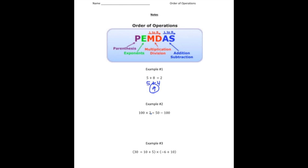Let's take a look at example number 2. Here we have 100 times 2 divided by 50 minus 100. So we have multiplication, division, and subtraction. Well, remember, you always want to work left to right. So we're going to first do multiplication and then division. So 100 times 2 is 200.